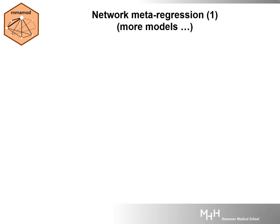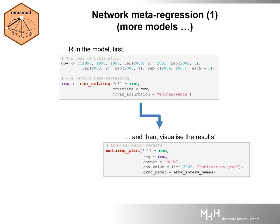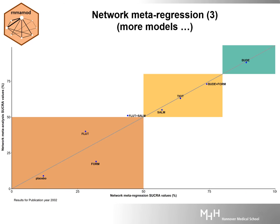We conclude this teaser tutorial with network meta-regression. We used the run_metareg function to run the model, and insert the result into the metareg_plot function to obtain several results in tabular and graphical format. We will present results for publication year 2002 with Budesonide as the selected comparator. In plot A, the 95% credible intervals shown as black lines overlap with the 95% prediction intervals shown as colored lines, with odds ratios referring to comparisons with Budesonide. In both plots, interventions are sorted from best to worst based on the SUCRA value found in plot B. The hierarchy of interventions does not seem to materially change when comparing the two models regarding the SUCRA values for publication year 2002.